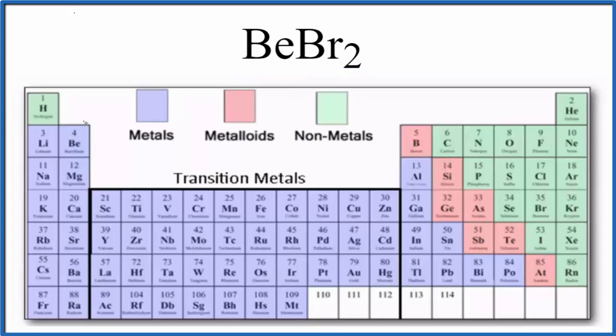So if we go to the periodic table, we find beryllium right here and bromine right here. We have a metal and then we have bromine, that's a non-metal. When we have a metal and a non-metal, we're thinking it might be an ionic compound.